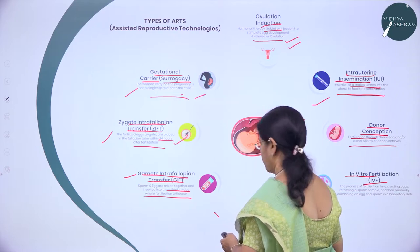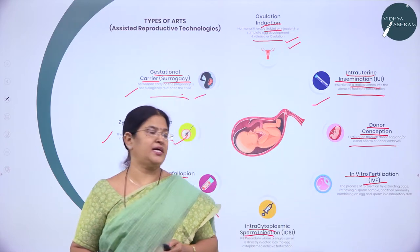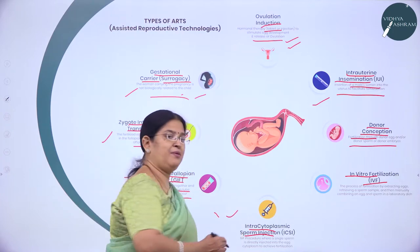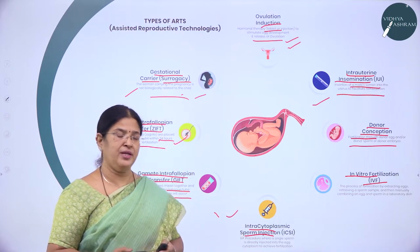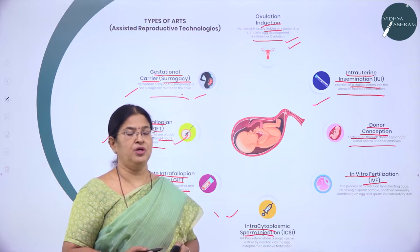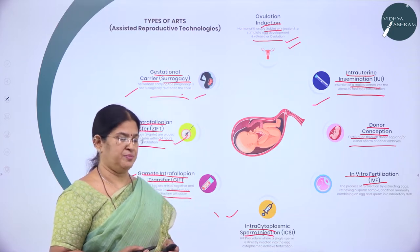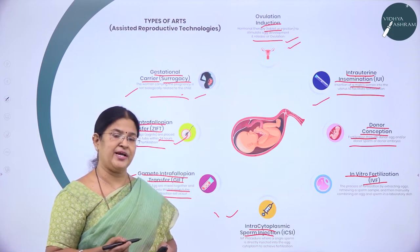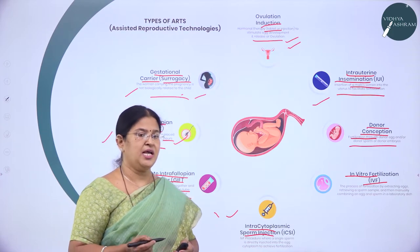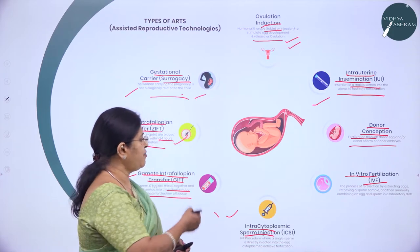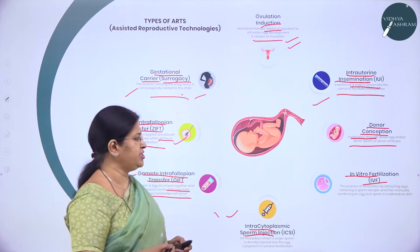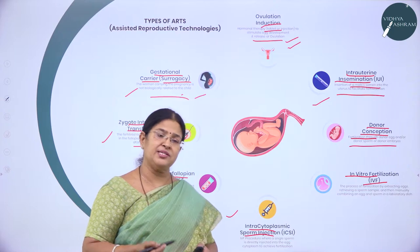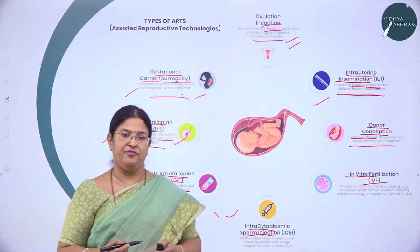Intracytoplasmic Sperm Injection — ICSI — is a technique particularly applied to men who have low sperm count or abnormal sperms. Here the sperm is taken and injected into a mature egg and the process of fertilization is allowed to proceed. These are the ARTs that assist conception to overcome infertility.